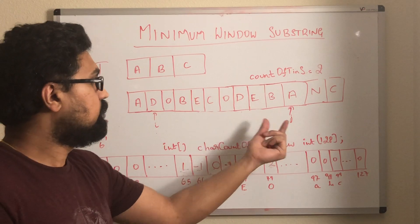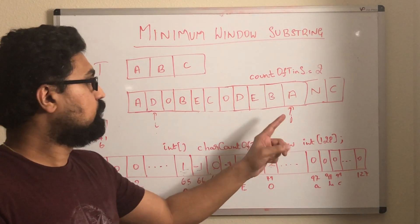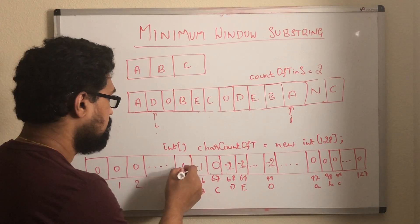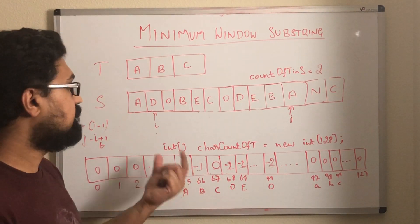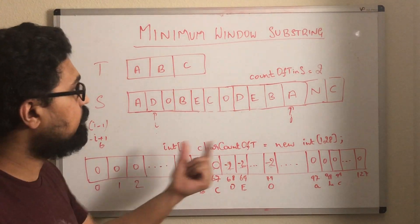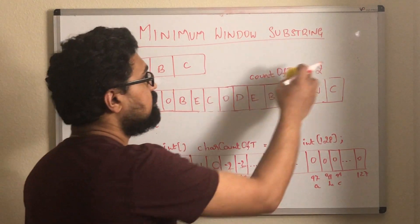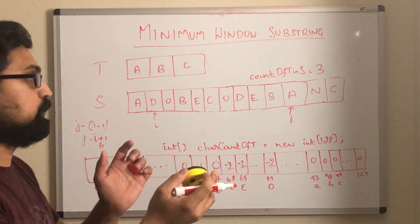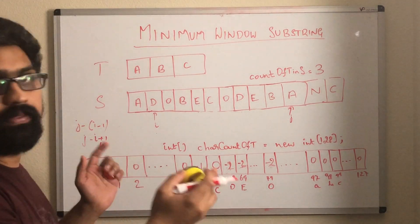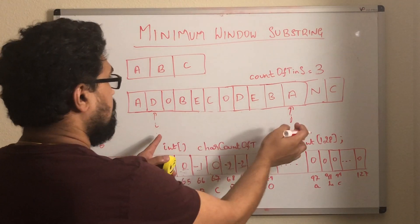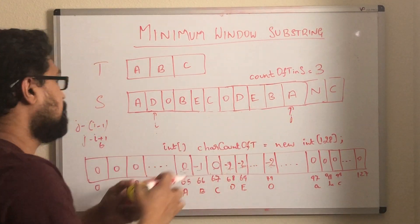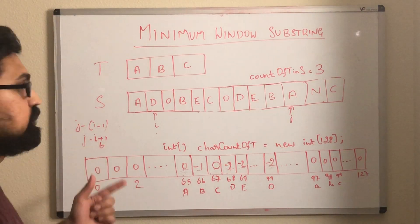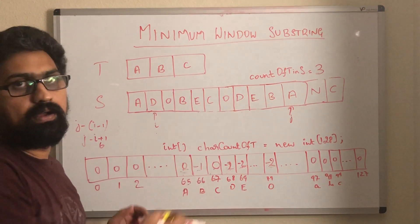Now let's decrement the value of the character pointed by j in this character count array. Here it is 1. Let's decrement that by 1. So we have 0. If this is greater than or equal to 0, that means we have found a character that belongs to t. So in that case, we will increment this count, making it 3. Now again, we have found a new window that contains all characters of t. And that window is this whole window. The length of this window is greater than 6. So we don't need to do anything. We can just explore other possibilities.